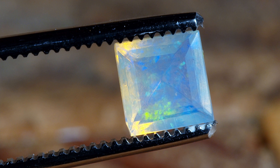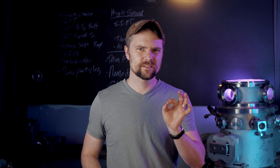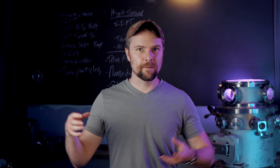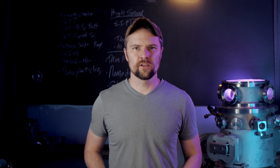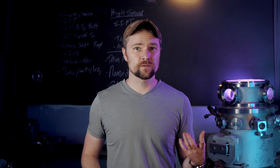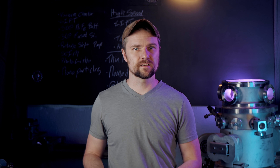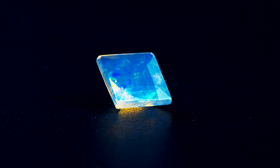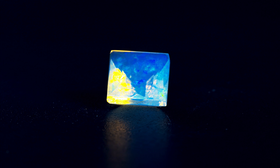Opals are a really neat structure because they're composed of silica nanoparticles, or essentially really small glass beads. These nanoparticles, when they pack together, form a type of structural color where the individual silica particles are clear, but when you put them together in a specific manner they give rise to different types of colors. That's essentially what gives opals their really characteristic flashing colors or iridescence.